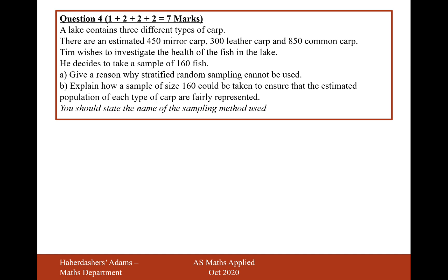Here we're looking at question four. A lake contains three different types of carp. There are an estimated 450 mirror carp, 300 leather carp, and 850 common carp. Tim wishes to investigate the health of the fish in the lake. He decides to take a sample of 160 fish.